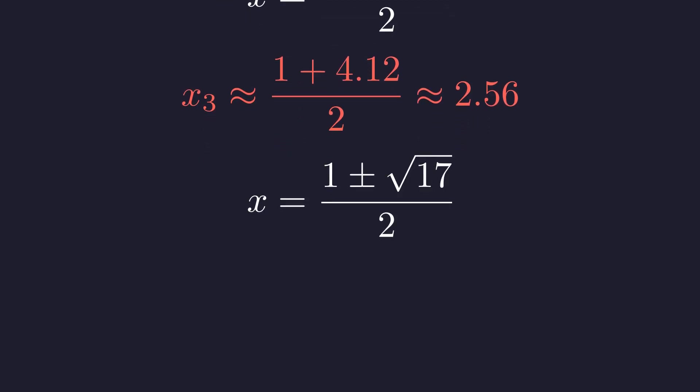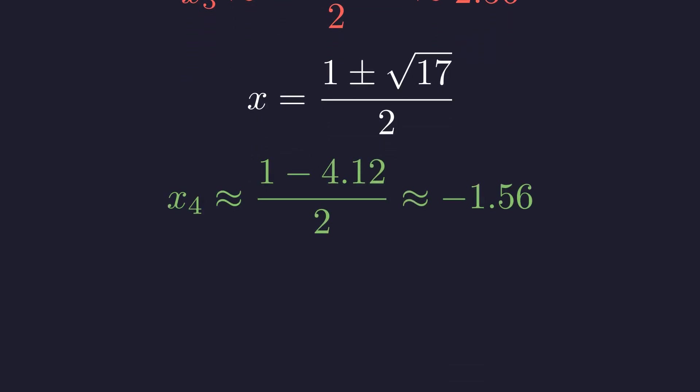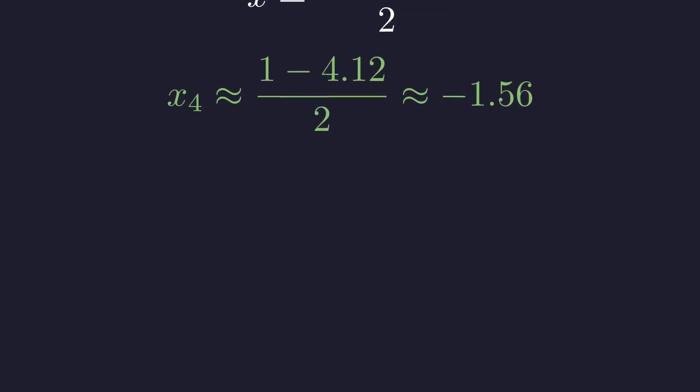Now let's check the second potential solution from case two. We get approximately negative 1.56. This value is safely inside our domain. Direct substitution confirms it solves the original equation. This is our second valid solution. We have found our second and final real solution.